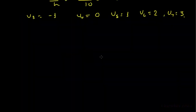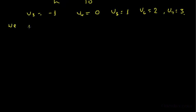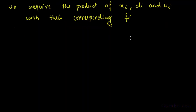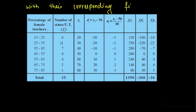According to the example, we have to solve this question by all three methods. We require the product of xi, di, and ui with their corresponding fi, and put all these values into a table. In this table, there are eight columns: the first column is percentage of female teachers; second is number of states and UTs, which is fi; third is class mark xi; fourth is di; fifth is ui; sixth is the product fi·xi; seventh is fi·di; and the eighth is fi·ui.